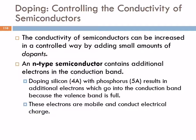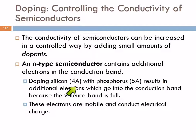We can also adjust the conductivity of semiconductors by doping — adding small amounts of a different substance called a dopant. An n-type semiconductor contains additional electrons in the conduction band. If we take silicon, which is a Group 4 element with four valence electrons, all those valence electrons are in the valence band, with a small energy gap to the conduction band.